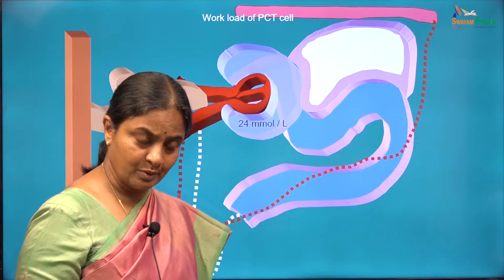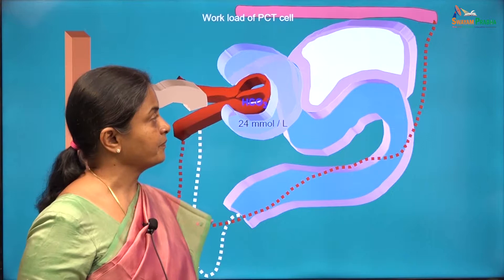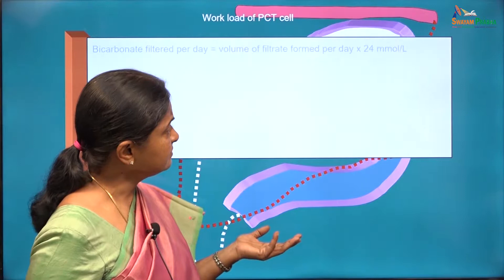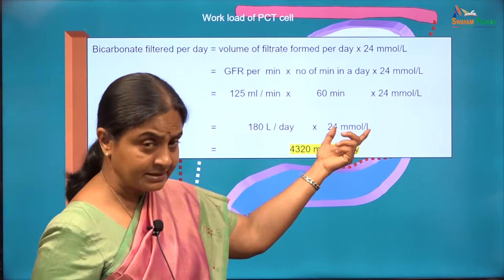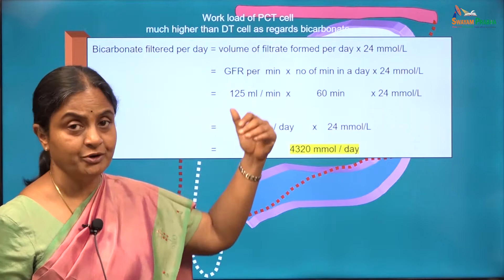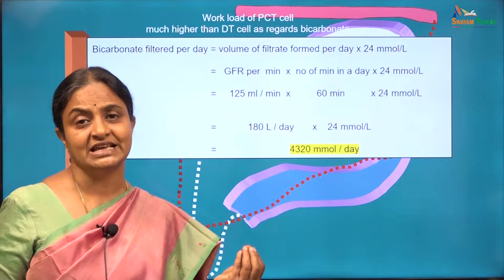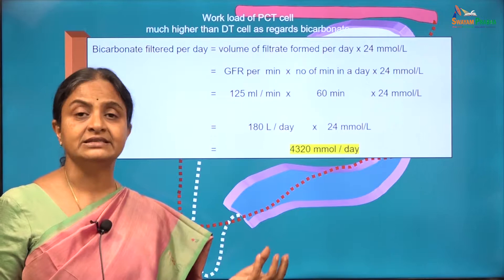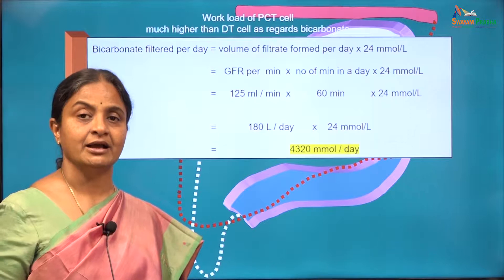As an academic exercise, we will consider the workload of the proximal tubular cell in reabsorbing bicarbonate. Bicarbonate is freely filtered, and the amount filtered will be GFR per day — 180 litres — multiplied by the concentration of bicarbonate in the filtered fluid, which works out to nearly 4000 millimoles per day. That is the amount that must be reabsorbed by the proximal tubular cell. In comparison, the distal tubules need to generate bicarbonate equal to the amount consumed daily for buffering of fixed acids — 50 to 100 millimoles per day. The workload of the proximal tubular cell is much more than that of the distal tubular cell.